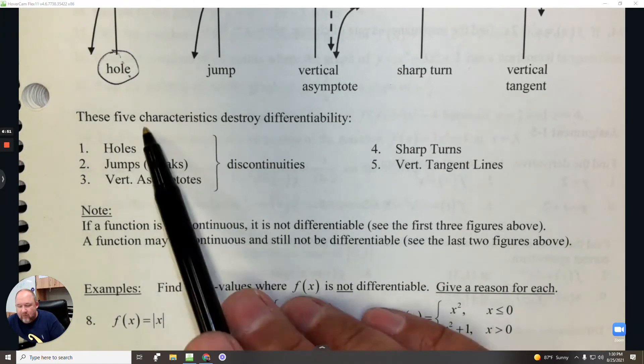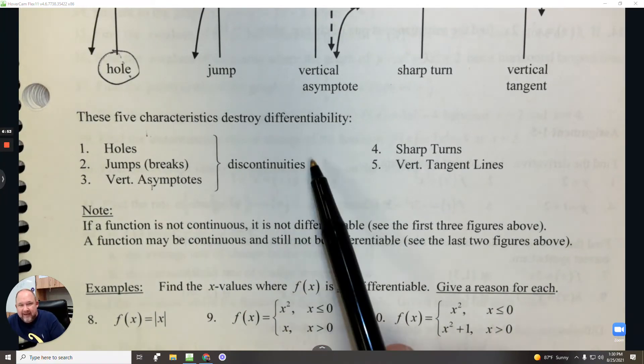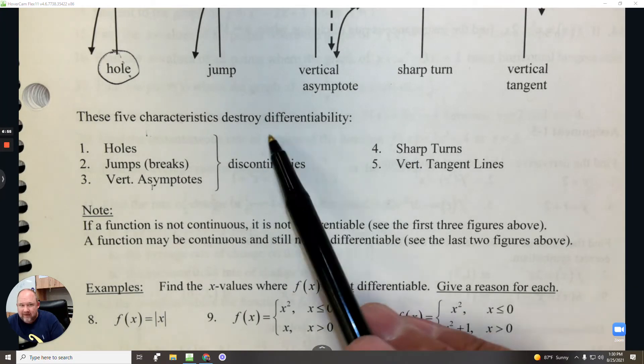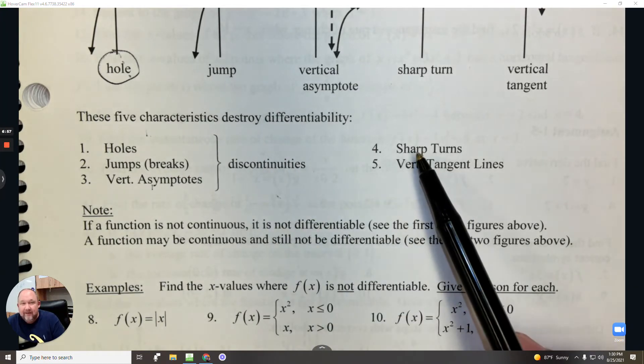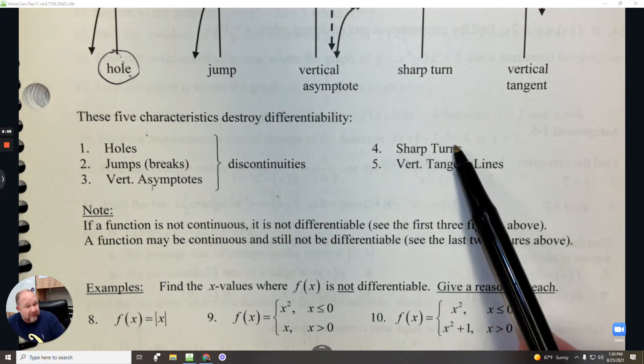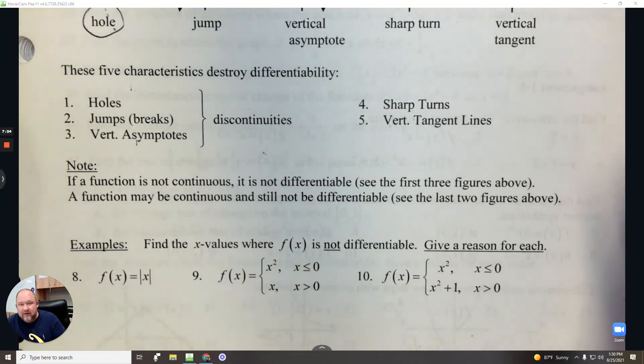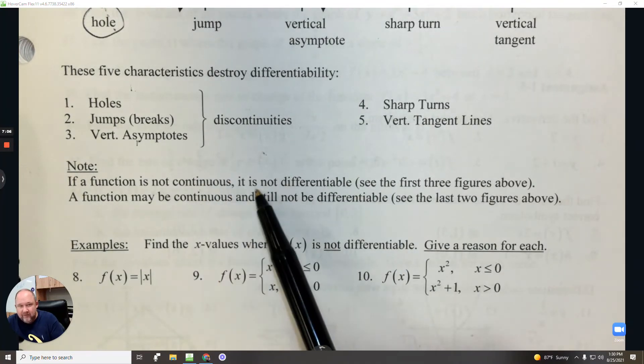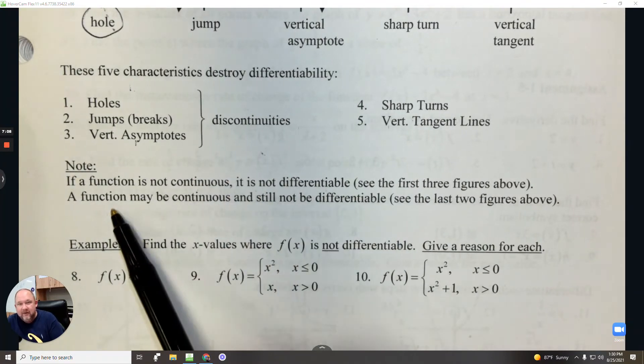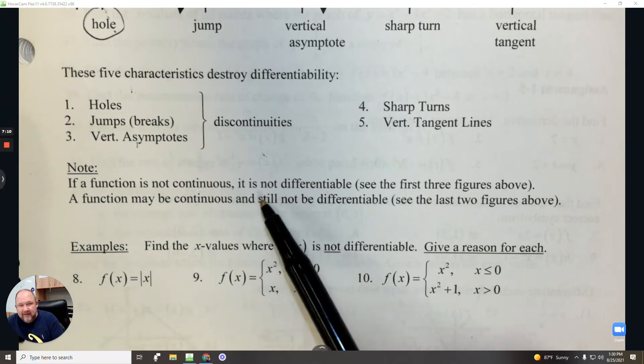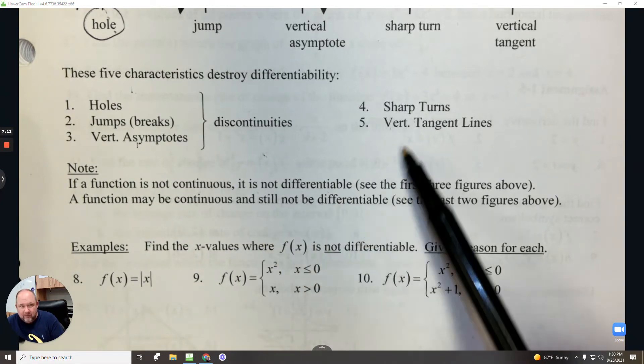So these five characteristics destroy differentiability. That's a strong word. So holes, jumps, and vertical asymptotes, any discontinuity, you can't take the derivative. And if it's continuous but has a sharp turn or a vertical tangent line, also you can't take the derivative. If a function is not continuous, it is not differentiable. A function may be continuous and still not be differentiable.